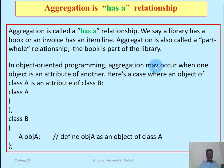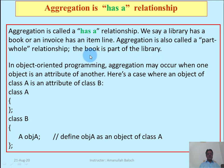In object-oriented programming, aggregation may occur when one object is an attribute of another. The book object has its serial number, author, name, and price. The library object has its own features — employees, cupboards, furniture, chairs. So the book is a part of the library class.